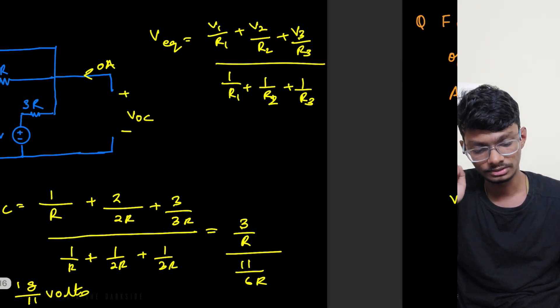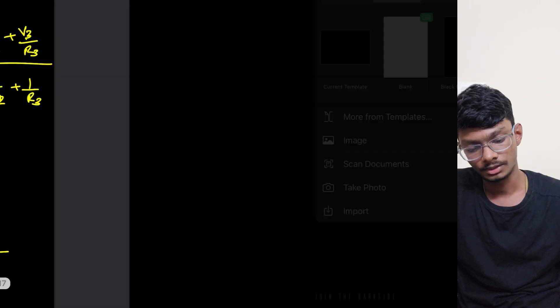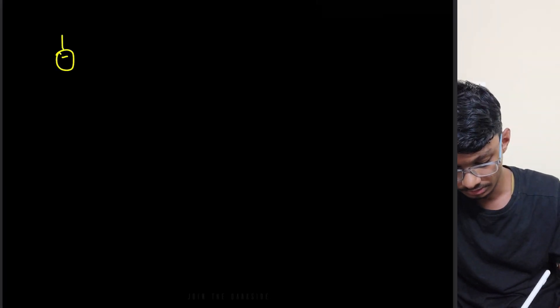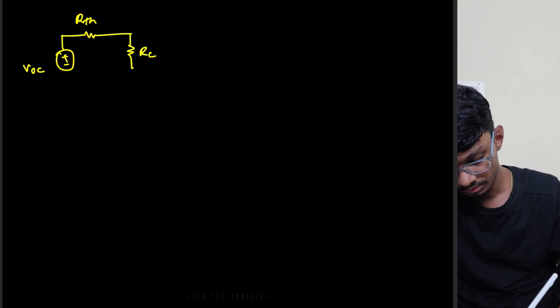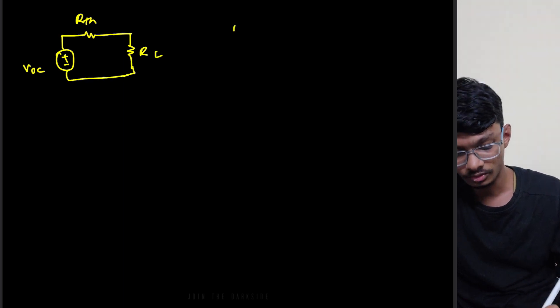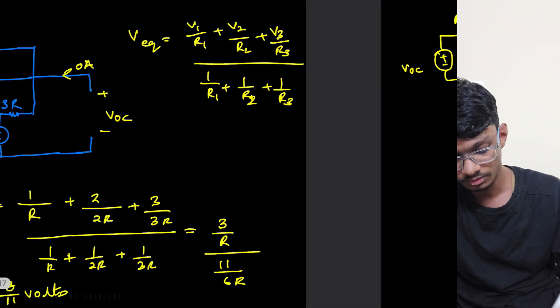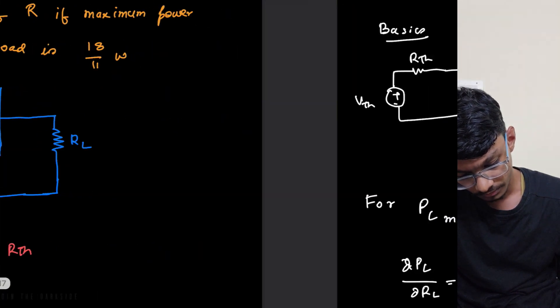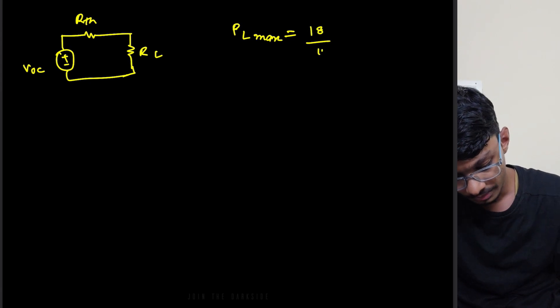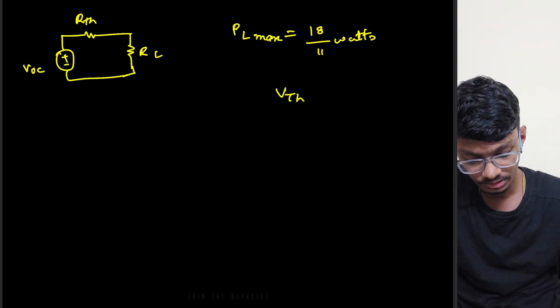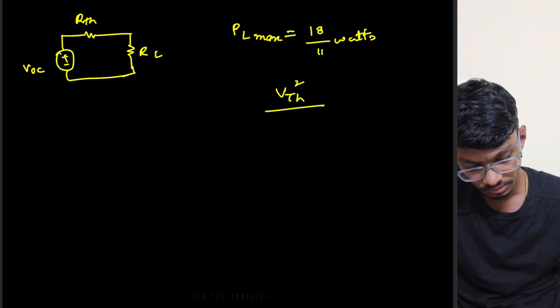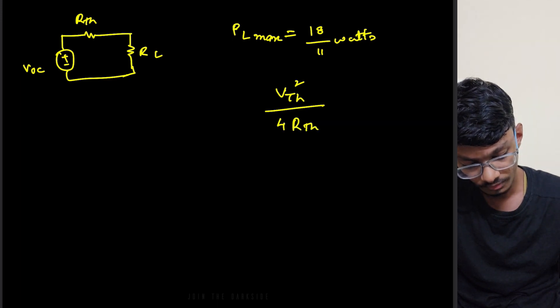So we have got the Voc, we have got the Rth. So let's now write the equivalent circuit: this is Voc, this is Rth, we have RL. Now in the question it has already given us that PL max equals to 18 by 11 watts. So PL max equals to 18 by 11. So what is this? Basically this is Vth square divided by 4 Rth equals to 18 by 11.